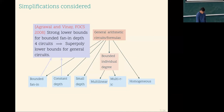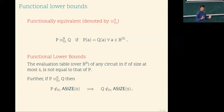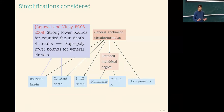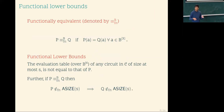We have lower bounds under these restrictions. What can we do with lower bounds in restricted settings? They may not give us general arithmetic circuit size lower bounds, but maybe they could be useful for something else. This is where functional lower bounds come in. So far, our lower bounds have been about the complexity of symbolically generating a given polynomial.